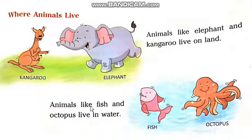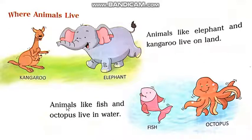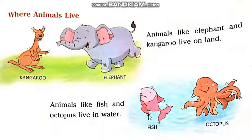Animals like fish and octopus live in water. Animals jaysay fish and octopus hain, wo water mein rehte hain. Students, you can see in this picture — this is octopus and this is fish. Both these animals live in water, paani mein rehte hain.